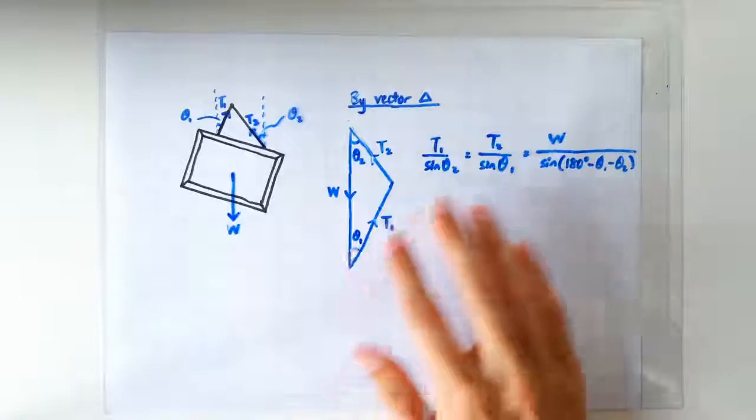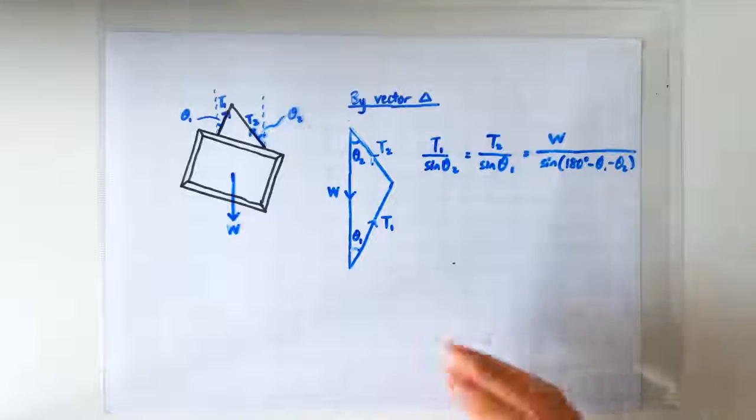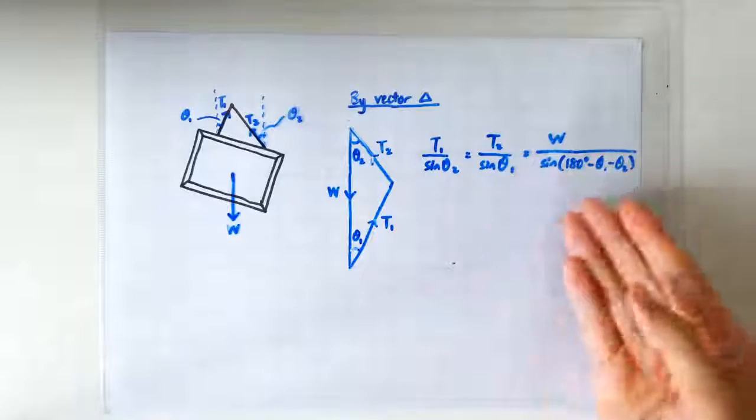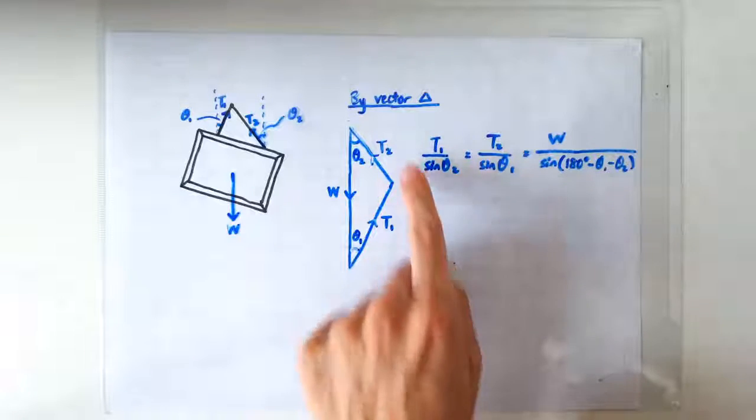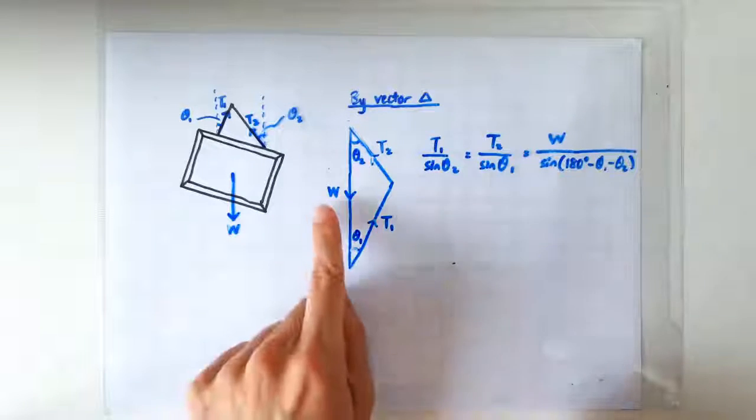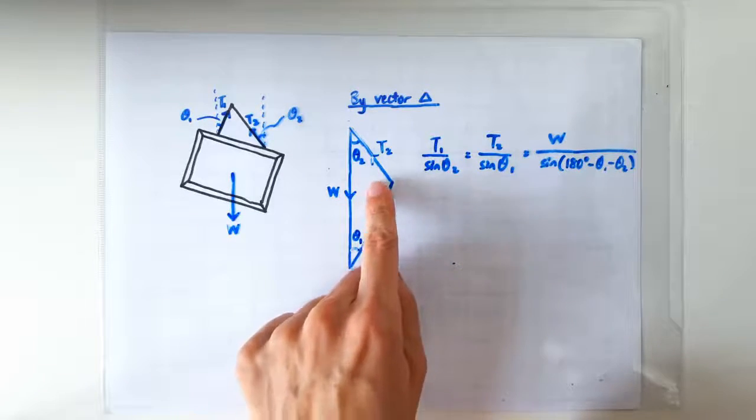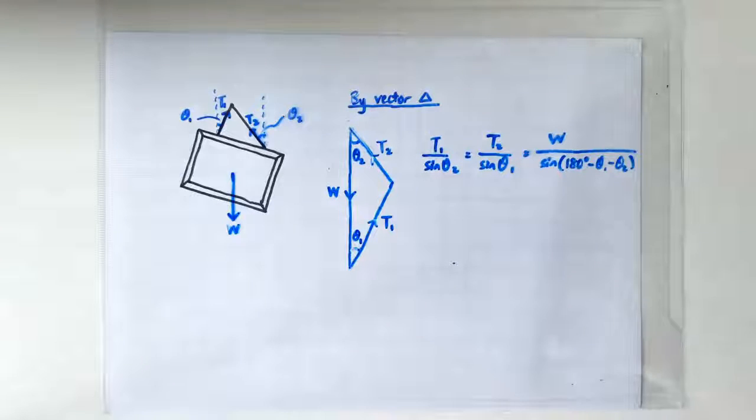So depending on what are the given values in the problem, the solution may involve the sine rule. So T1 over sine theta 2 is equals to T2 over sine theta 1 is equals to W over sine of this angle, which is 180 degrees minus theta 1 minus theta 2.